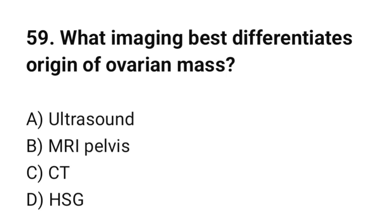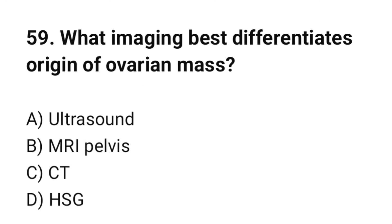Question number 59. What imaging best differentiates origin of ovarian mass? The correct option is B: MRI pelvis.